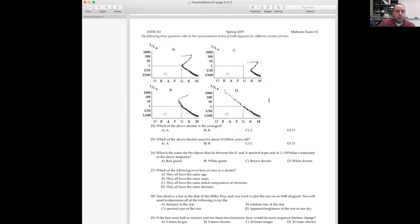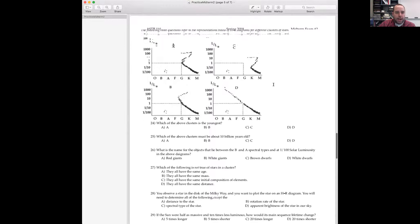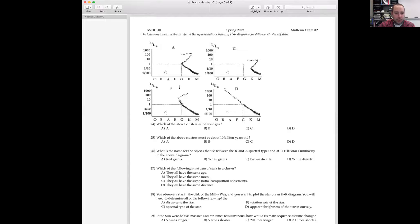Any other questions? We probably have about 10 more minutes, I'm guessing, before Zoom kicks us out. Okay, 24 and 25, let's do it. 24 and 25 all refer to this diagram up here. So we've got four different clusters, and we need to figure out in 24, which is the youngest.